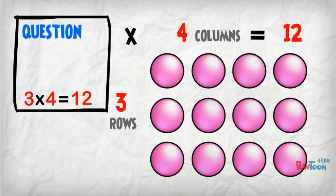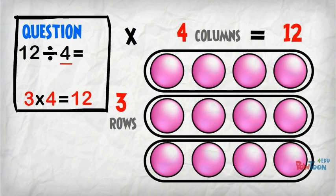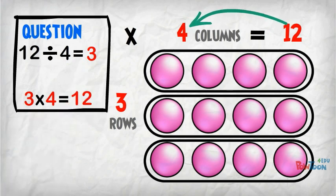If we have the question 12 divided by 4, we are making groups of 4. You can see we get 3 groups of 4. 12 divided by 4 is 3.